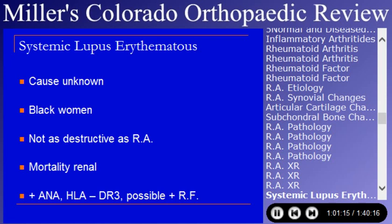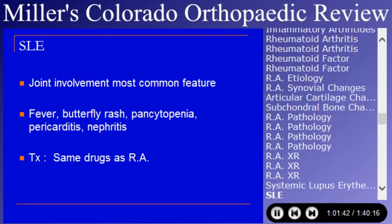Systemic lupus occurs primarily in black women. It is an inflammatory arthritis of unknown etiology — not as destructive as rheumatoid arthritis. The primary mortality in systemic lupus is renal. It is associated with a positive ANA test and sometimes a positive rheumatoid factor. Joint involvement is common. Patients are systemically ill with fever, butterfly rash, pericarditis, and nephritis. Both entities are primarily treated medically.